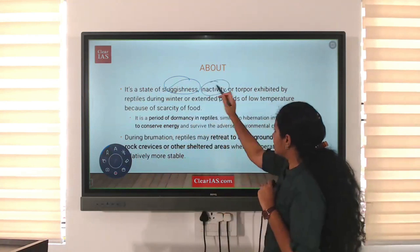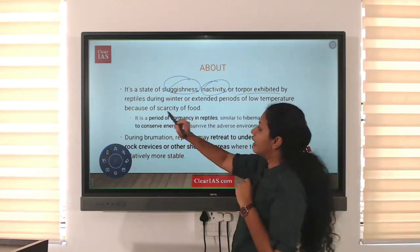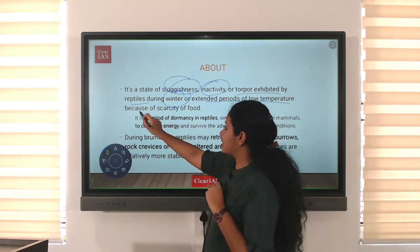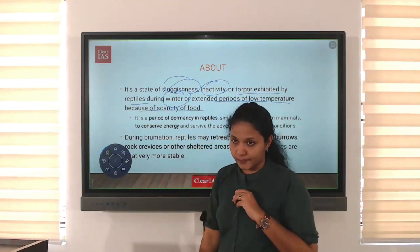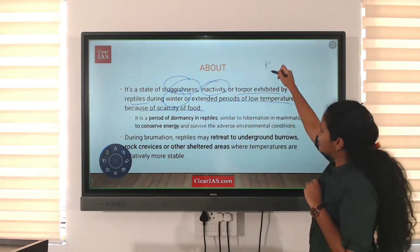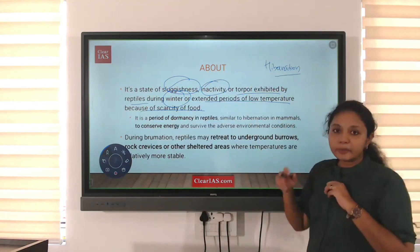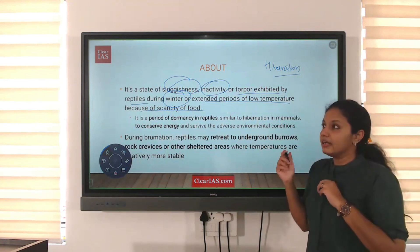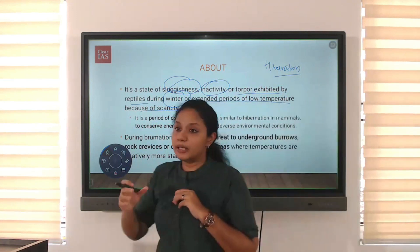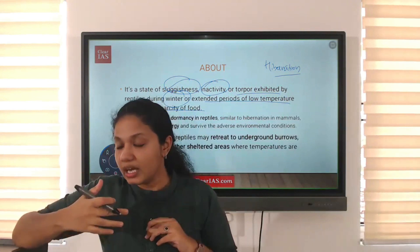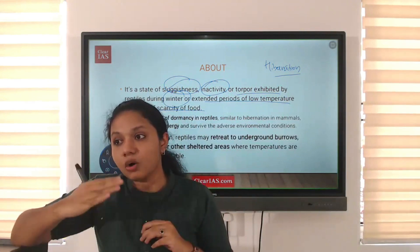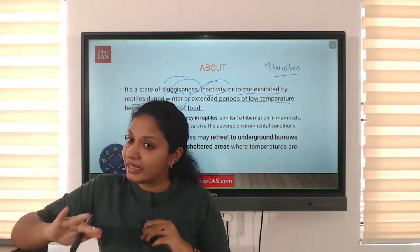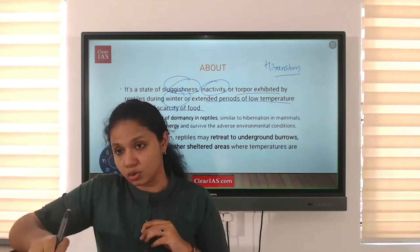Brumation is a state of sluggishness, inactivity, or torpor exhibited by reptiles during winter or extended periods of low temperature due to scarcity of food. We can nearly equate it to hibernation, which also involves reduced metabolic activity. It cannot be equated to sleep, because in normal sleep we have normal breathing, whereas in hibernation breathing also slows drastically.